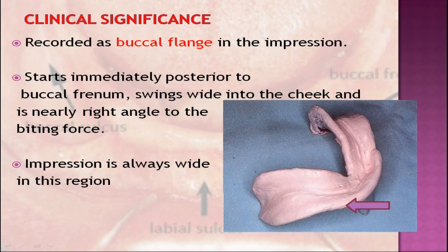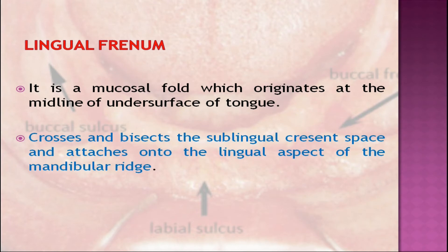The buccinator converges the denture border superiorly and mesially, forming a bulge. The masseteric notch in the distobuccal area of the denture base accommodates the mesial border of the masseter muscle. It is recorded as a buccal flange in the impression. The buccal flange starts immediately posterior to the buccal frenum, swings wide into the cheek, and is nearly at a right angle to the biting force. The distobuccal area of the impression will appear grooved and converged superiorly and mesially. The denture should cover the shelf area despite resting directly on fibers of the buccinator muscle.